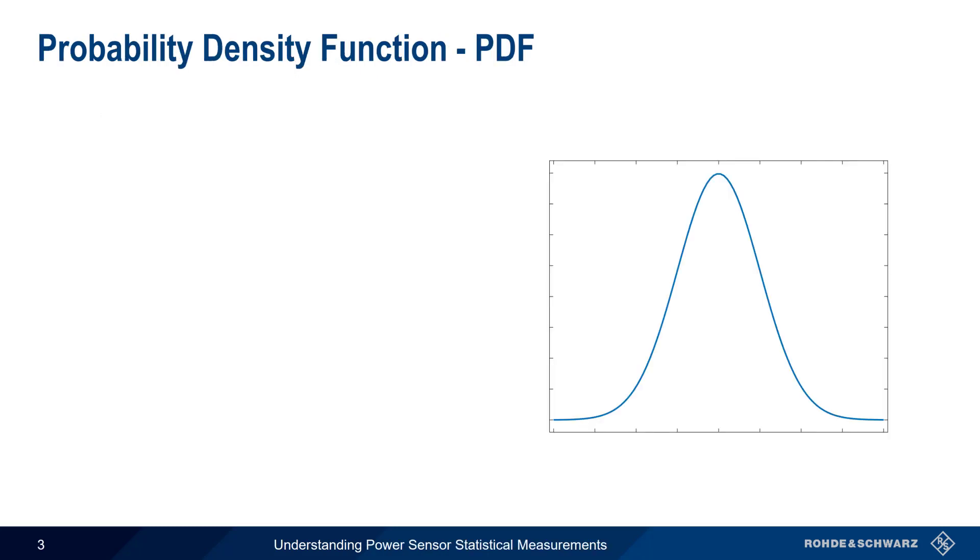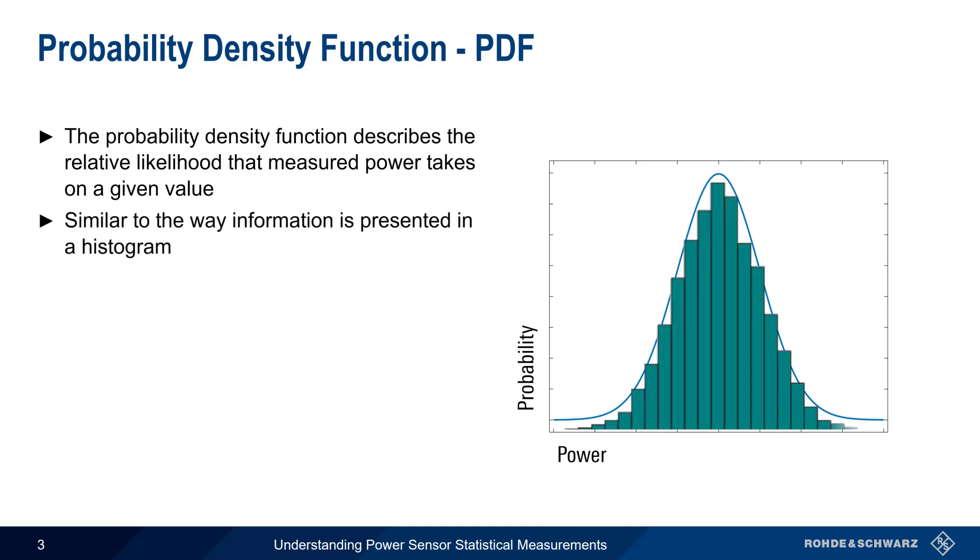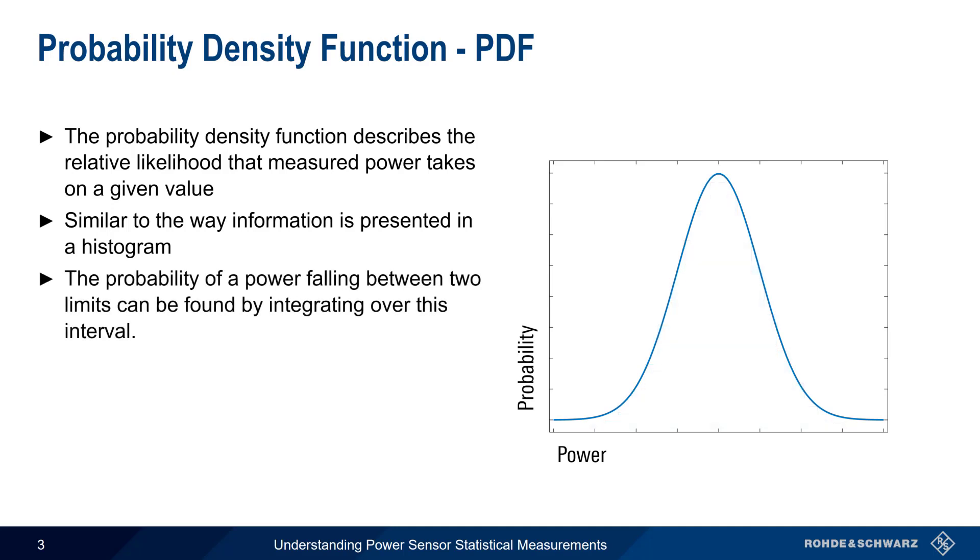The Probability Density Function describes the relative probability that measured power takes on a given value. The information contained in a PDF is similar to the information provided by a histogram, but shows continuous rather than discrete values. Using a PDF, we can find the probability of a measured power falling between two limits by integrating over this interval.